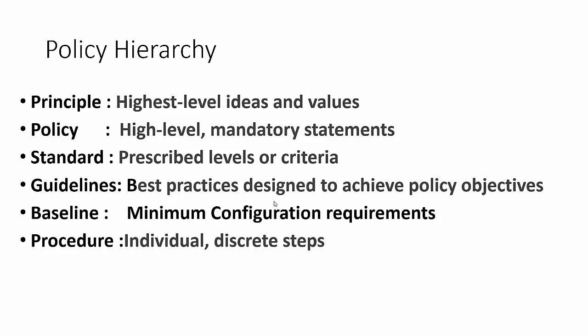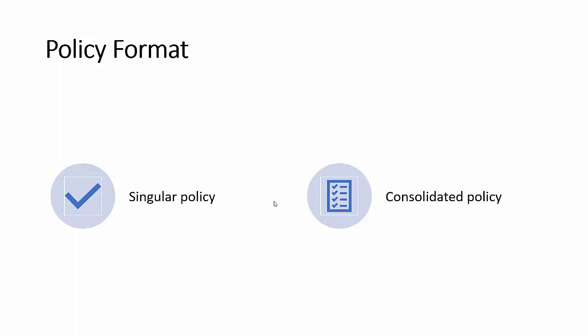Before you begin writing a policy, it's very important to decide how many sections will be required. Designing a template is recommended because it allows flexibility of editing and saves time. There are two schools of thought regarding policy format. First is to write each policy as a discrete document — called a singular policy — where for password policy you have a separate document, for antivirus a separate document, and so on. You can check the SANS website for examples. Second is a consolidated policy — one policy document that has everything included, which is the example I'm going to share today.